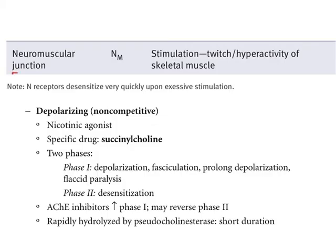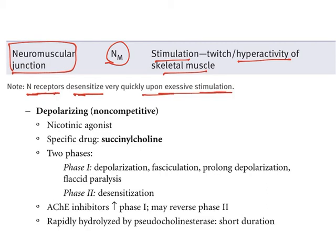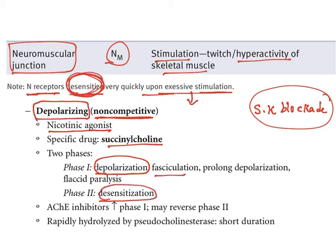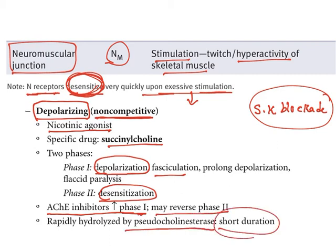With succinylcholine specifically, two phases occur: initially depolarization and fasciculation (Phase 1), and then Phase 2 results in desensitization. Acetylcholinesterase inhibitors enhance Phase 1 depolarization and may reverse Phase 2. Succinylcholine is rapidly hydrolyzed by pseudocholinesterases, giving it a short duration of action. Non-depolarizing agents, by contrast, are competitive antagonists — nicotinic antagonists. Tubocurarine is the typical prototype. They are reversible with acetylcholinesterase inhibitors because increasing acetylcholine levels competitively displaces the drug. They cause progressive paralysis of the face, limbs, and respiratory muscles, with no effect on cardiac or smooth muscle and no CNS entry.